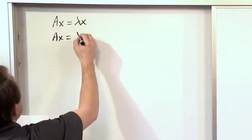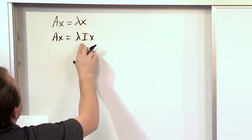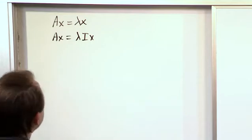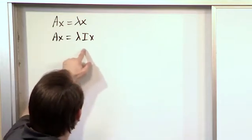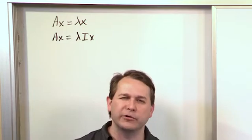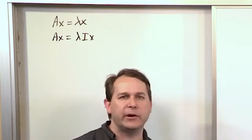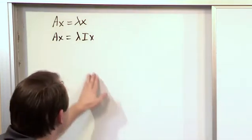Ax is equal to, I can write this as lambda times Ix, where I is just an identity matrix. Remember, an identity matrix is just a matrix with ones along the diagonal. It doesn't really change anything. It's like multiplying by one. So I can take any equation and multiply by one. That's all I'm doing here.